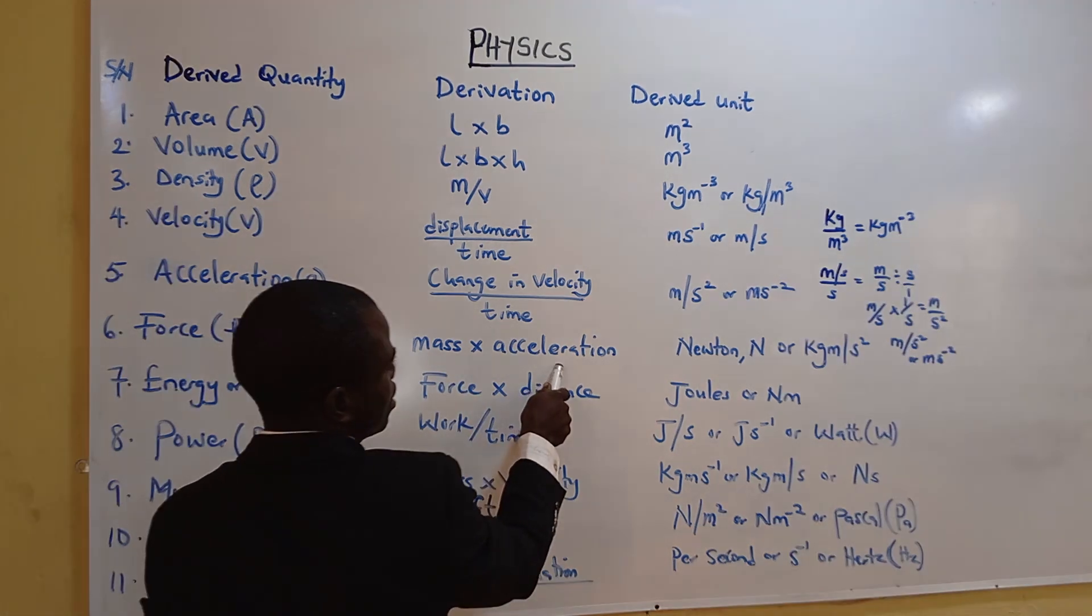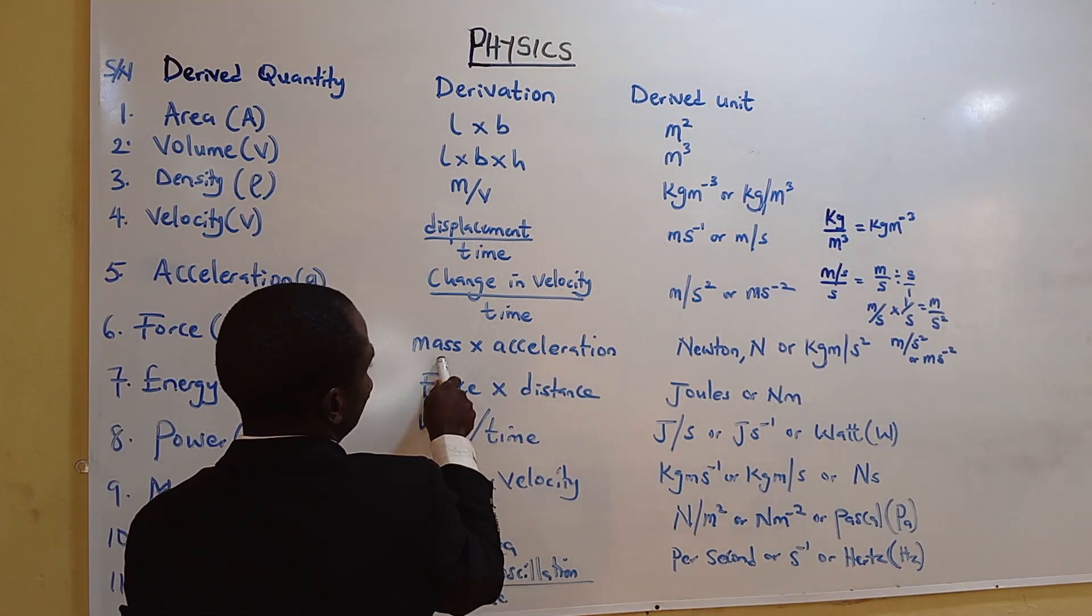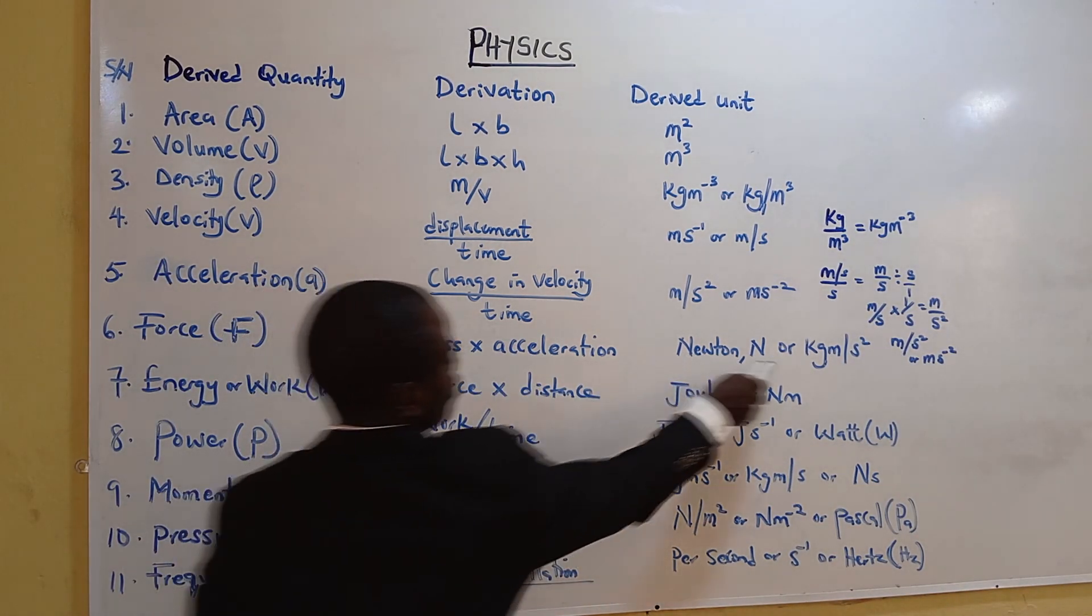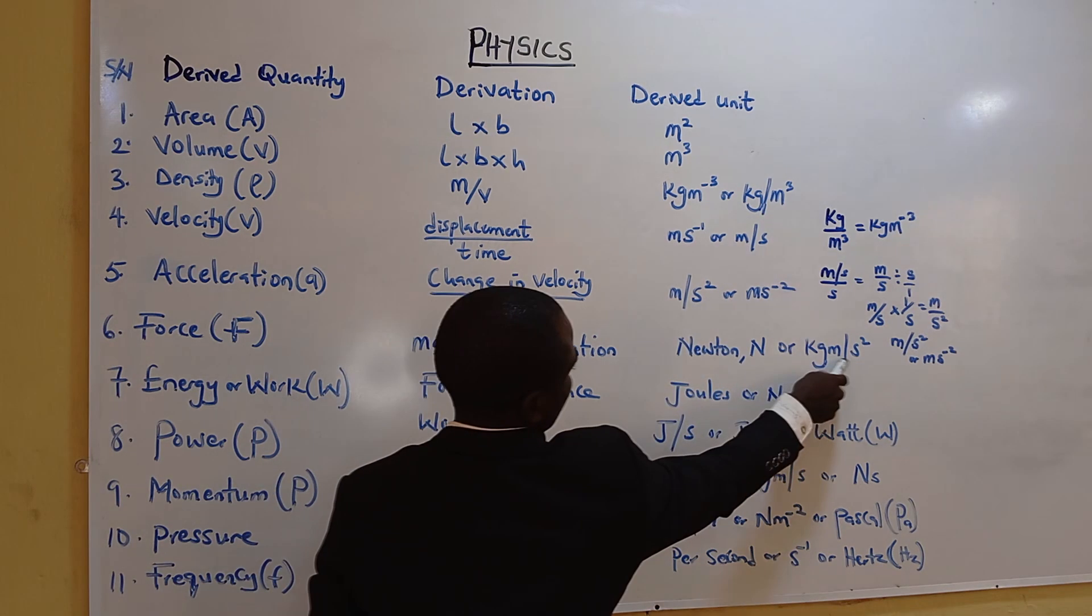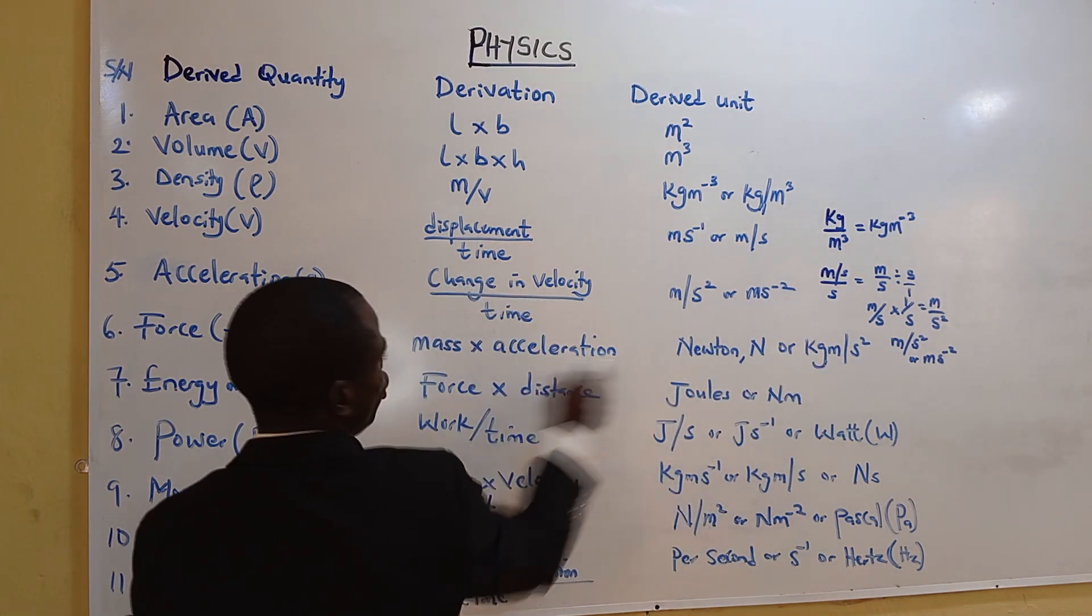Force is mass times acceleration. Unit of mass is kilogram. Unit of acceleration that you have is meter per second squared. Put them together, or newton.